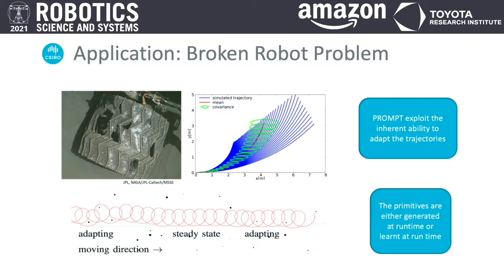A key advantage of PROMPT-O is its ability to allow for adaptation of the underlying motion primitive distribution. As shown in the top left, with scenarios like damage to the wheel of a lunar rover, the robot's kinematics gets affected. A simple recalibration of the motion primitives, either from a higher module or learned in-situ, allows such damaged robots to navigate obstacle fields.